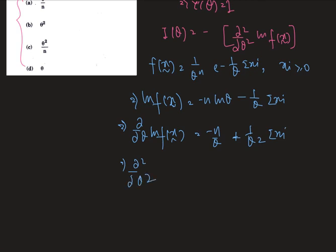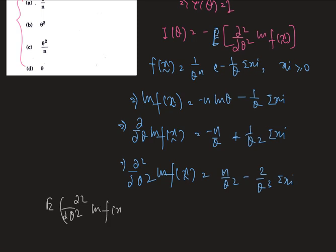Del squared del theta square ln f(x) curve is n by theta square minus 2 by theta cube sum over xi. This must be the expected value of this, therefore expectation of del squared del theta squared ln f(x) curve is n by theta square minus 2 by theta cube sum over expectation of xi.